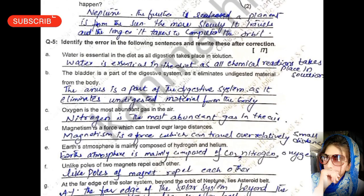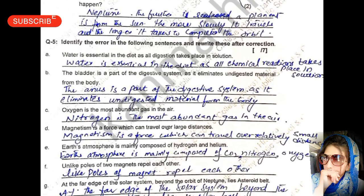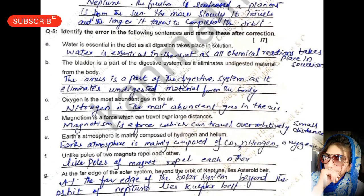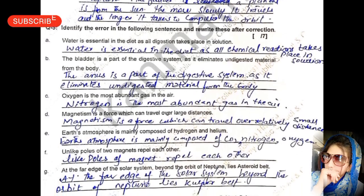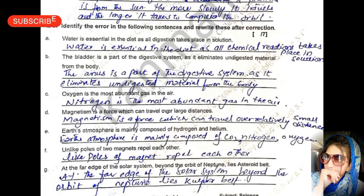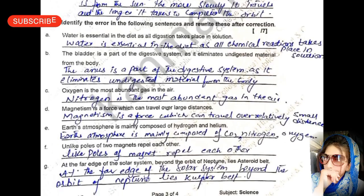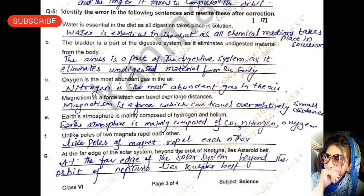Identify the error in the following sentence and rewrite it after correction. What is essential in the diet as all digestion takes place in the solution? The correction is: what is essential in the diet as all chemical reactions take place in the solution — instead of 'digestion', it should be 'chemical reactions'.